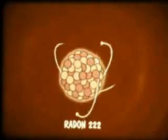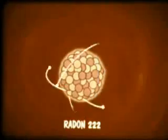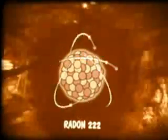Thus, radon is being gradually formed in all uranium-bearing rock. Being a gas, radon can seep into the mine air from rock surfaces and cracks exposed by mine openings. Normal radioactive decay of radon then continues in the mine atmosphere.